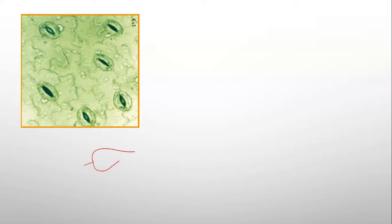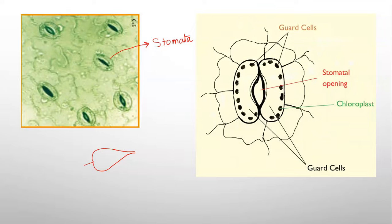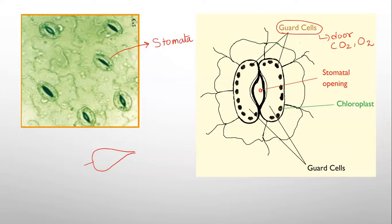If we examine a leaf under a microscope, we find small eye-shaped structures known as stomata. Looking at the structure of stomata, they have different components. The first component is the guard cell. Guard cells act like a door — they control the entry of carbon dioxide and oxygen through the stomatal pore opening.